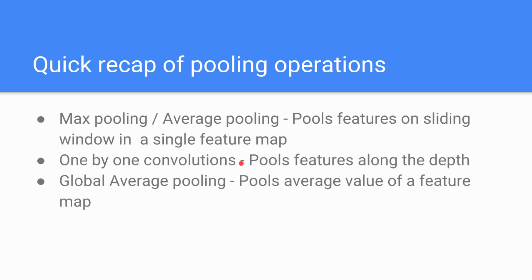And this is global average pooling, which pools the average value of a single feature map. That's all for this lecture, thanks for watching.